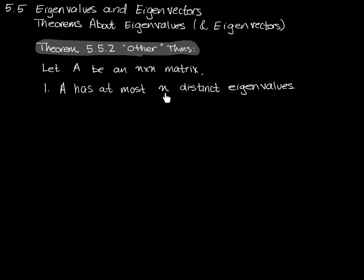We could have — if n is, say, five — then it's theoretically possible that we could have six eigenvalues, but two of them would then necessarily be the same number. That's what we mean by distinct.